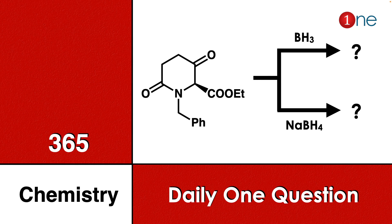Welcome to One Chemistry — this is the 365 Chemistry Series, daily one question for you. Here a cyclohexyl compound is given, which is piperidine. You have three different functional groups: one is a ketone, one is an imine, and one is an ester. You are using two different reagents — one is borane (BH₃) and another is sodium borohydride (NaBH₄) — and you have to find the different products.